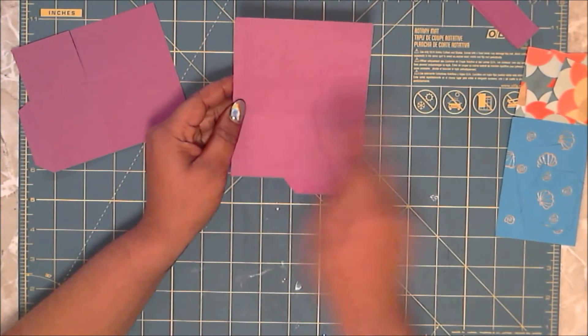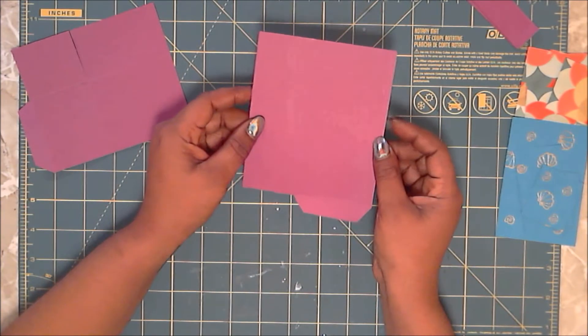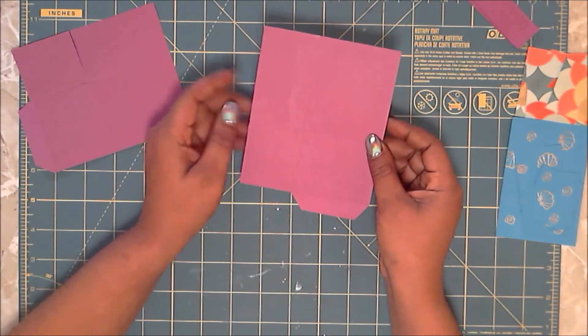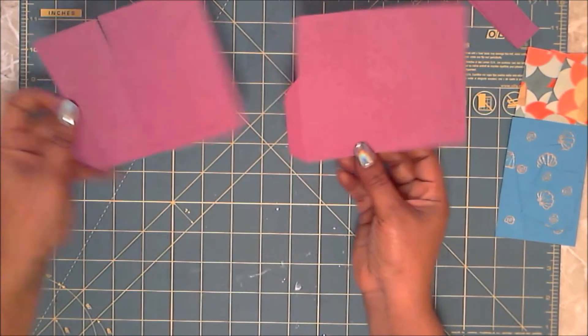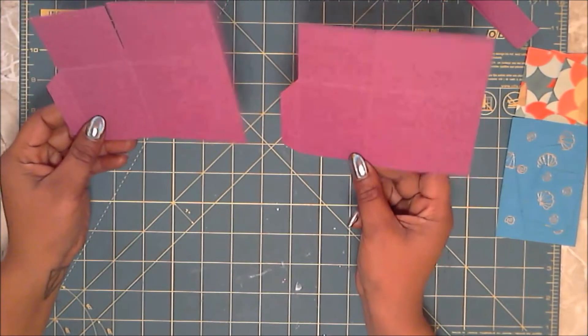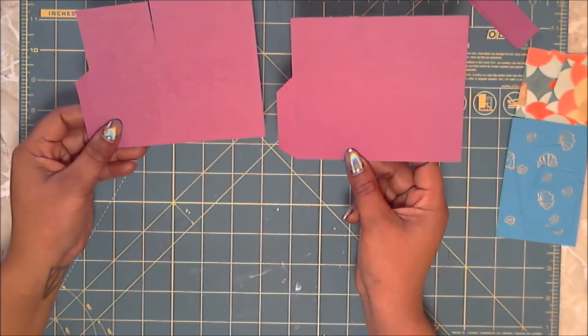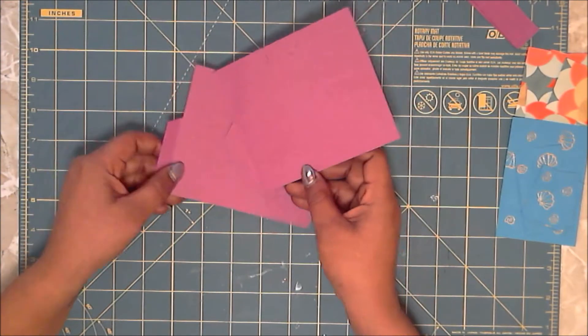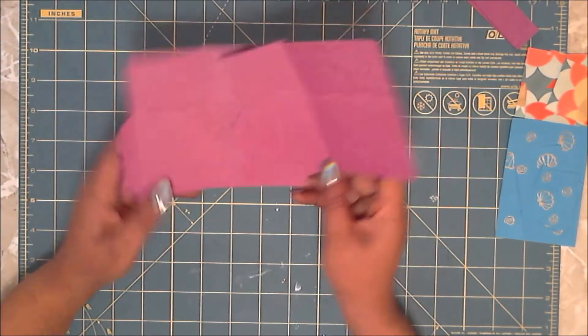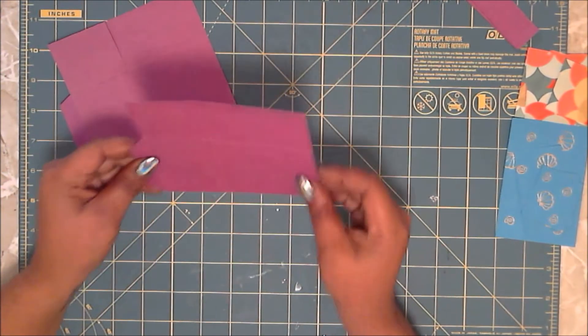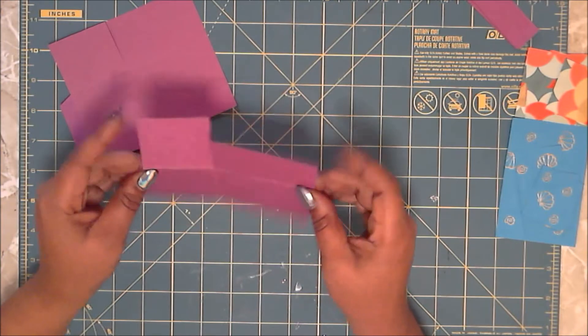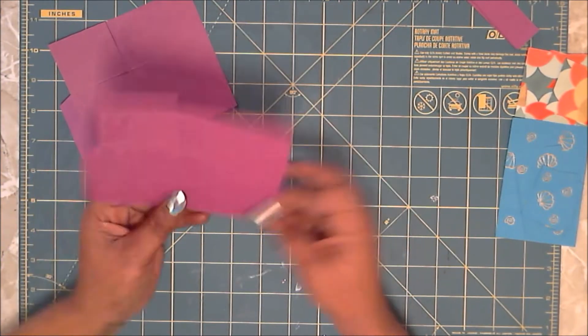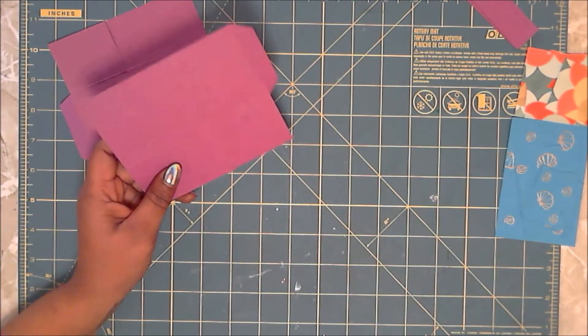And then on your shorter side, which is also called portrait, you are going to be scoring just one time at one and three quarters. And you are going to do that for both sides of your card stock, because you need four corners to make a box. So once you have that down, you can go ahead and burnish your score marks, and then you will do some cutting.